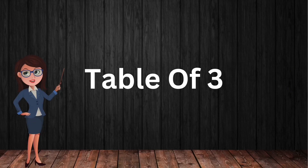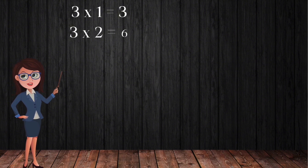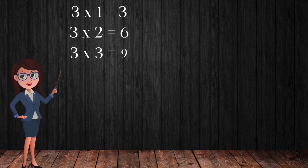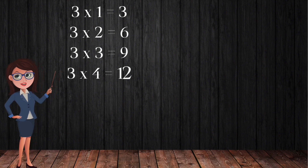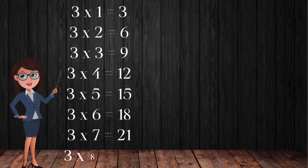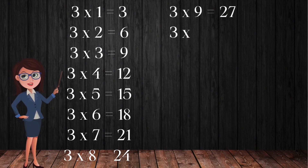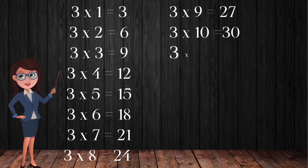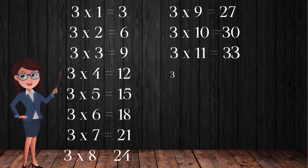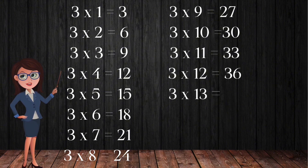Table of Three. Three 1's are 3. Three 2's are 6. Three 3's are 9. Three 4's are 12. Three 5's are 15. Three 6's are 18. Three 7's are 21. Three 8's are 24. Three 9's are 27. Three 10's are 30. Three 11's are 33. Three 12's are 36. Three 13's are 39. Three 14's are 42.